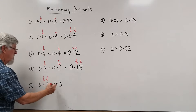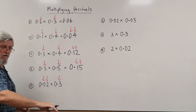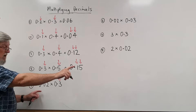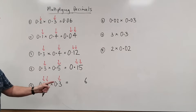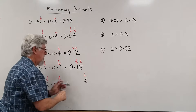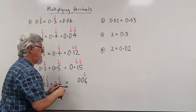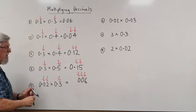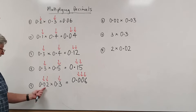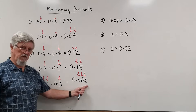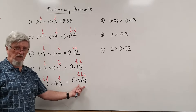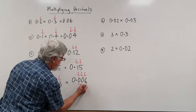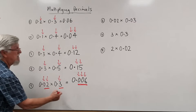Here's a trickier one: there's one decimal on that side and two on that side, so three on the right altogether. When I get my answer — two times three is six — I need three decimal places on the right. Watch how this traps students: they write 0.06 and don't have enough digits. You need all three places, counting back from the right: one, two, three. So the answer is 0.006.